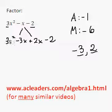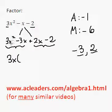Okay, so now we factor by grouping. 3x² minus 3x, I can factor out a 3x. 3x² divided by 3x is just x. Negative 3x divided by 3x is just negative 1.